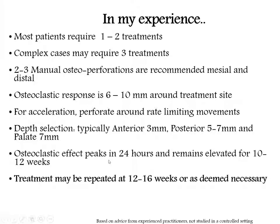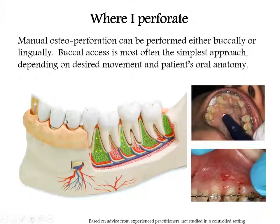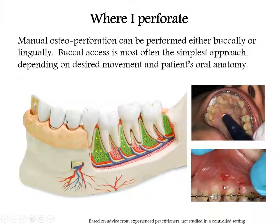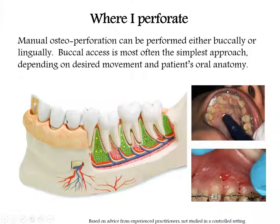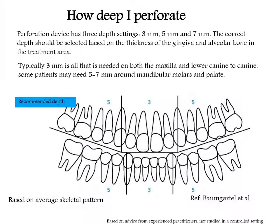Where do I perforate? Wherever you need to facilitate or accelerate treatment. If you have a palatally erupted cuspid, perforate all around it. For space closure, I'll do one in the attached tissue and one in the unattached. I sometimes go in at a slight 45-degree angle to get vertical disruption in addition to horizontal — to disrupt as much medullary bone as possible and stimulate localized inflammation.